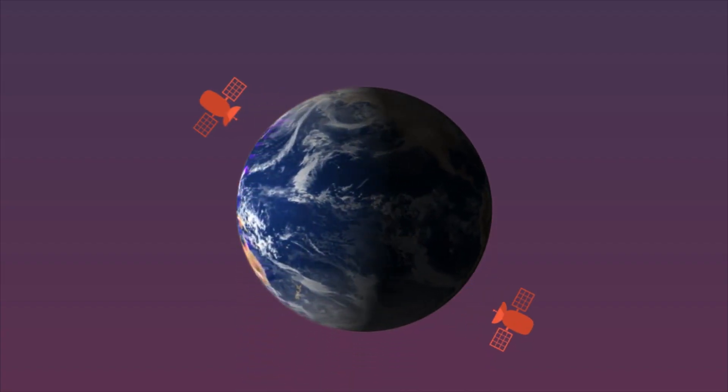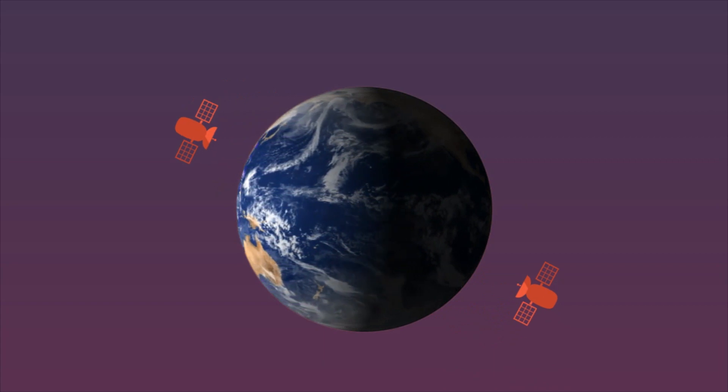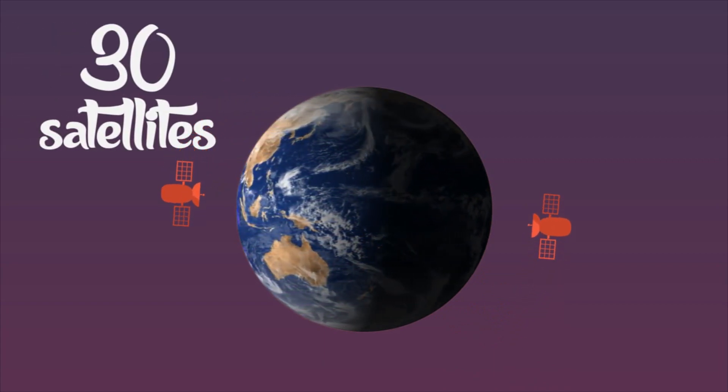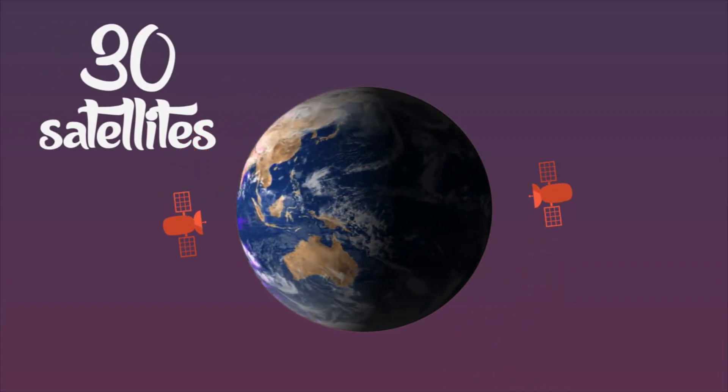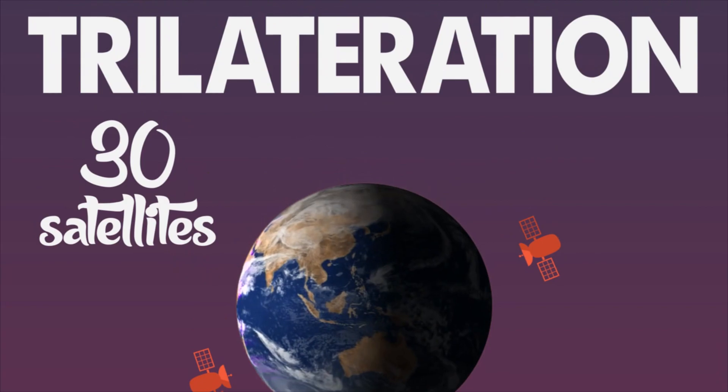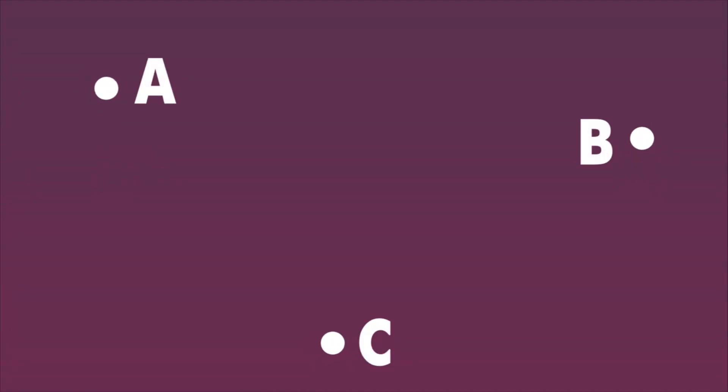Now, how does this affect GPS? GPS tracks your reference frame with its network of 30 satellites, including 4 spares, in a process called trilateration. Assume these points A, B, and C are satellites.